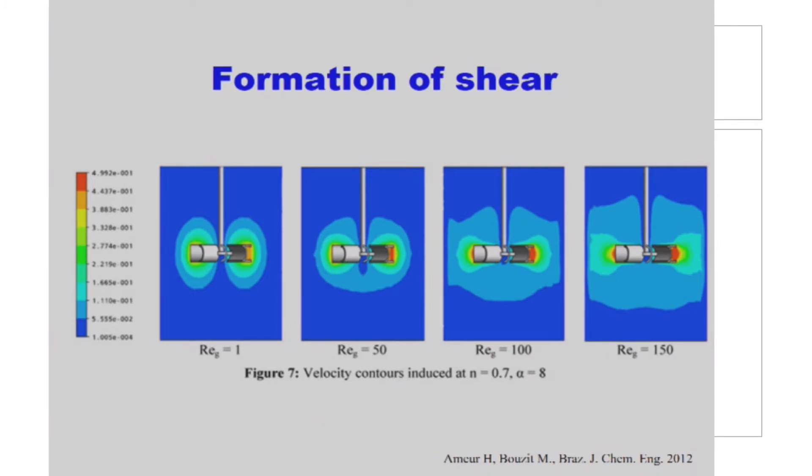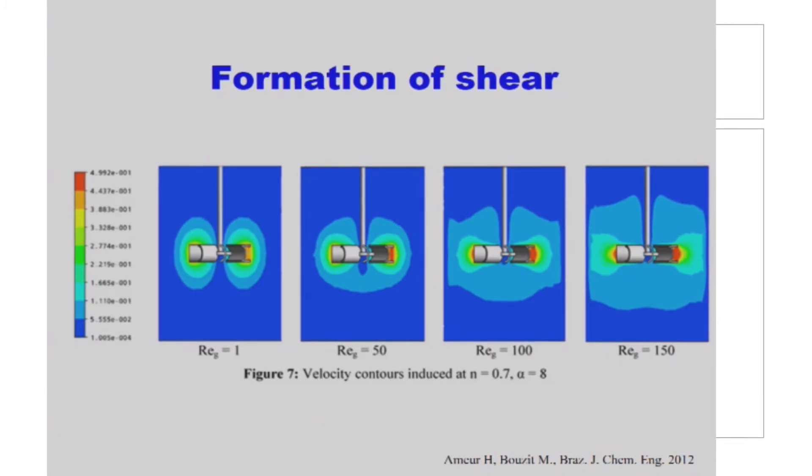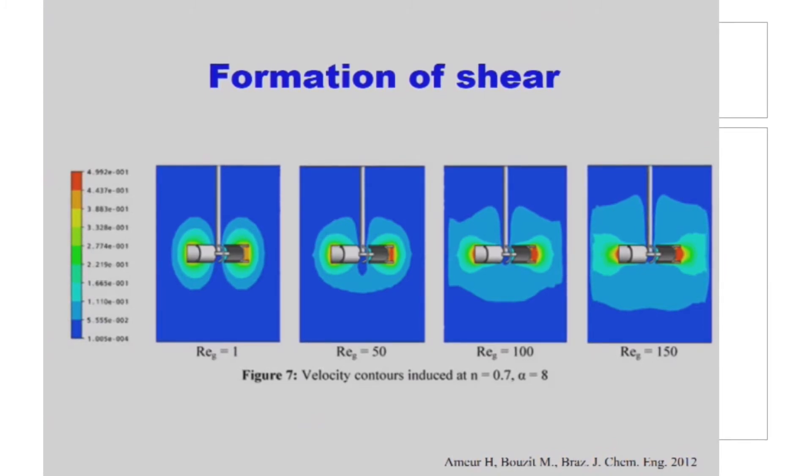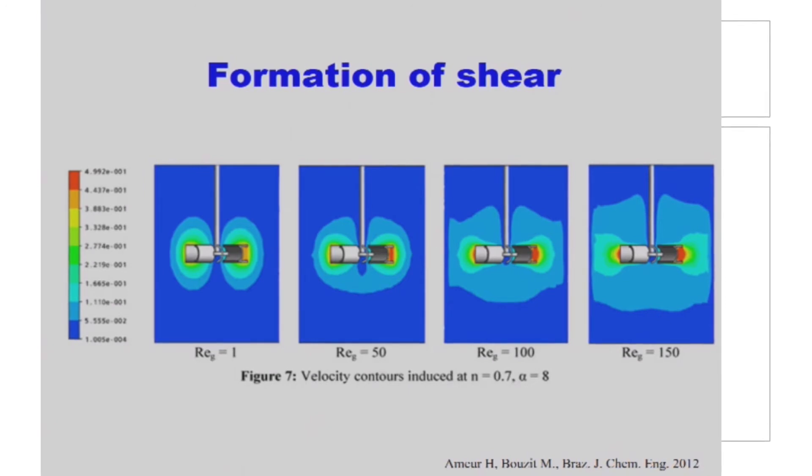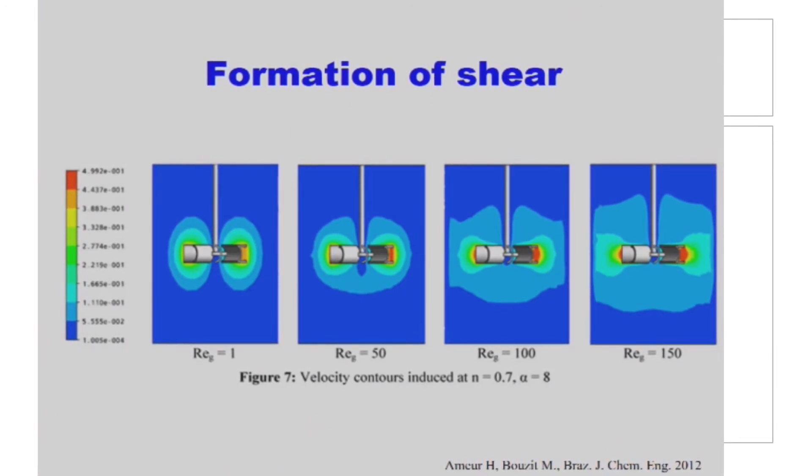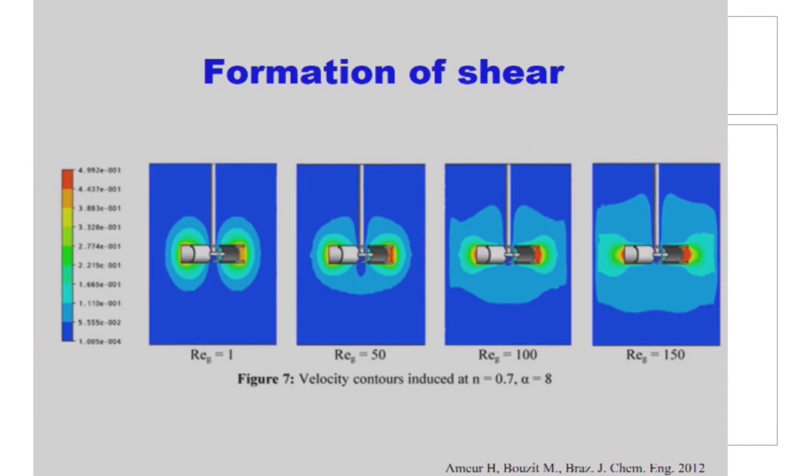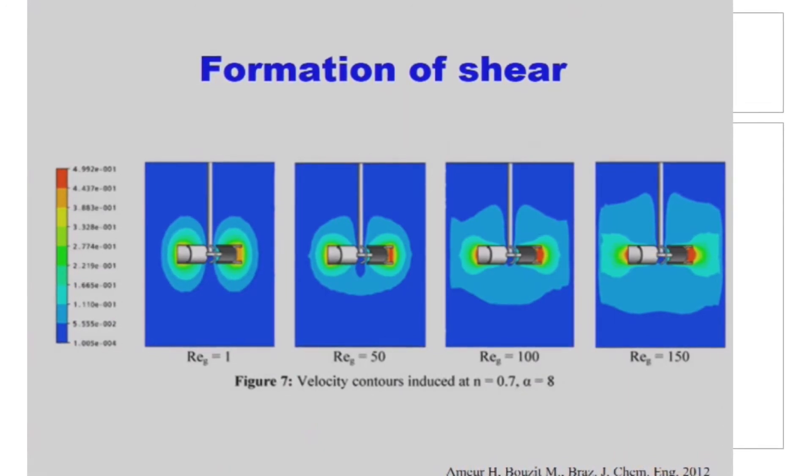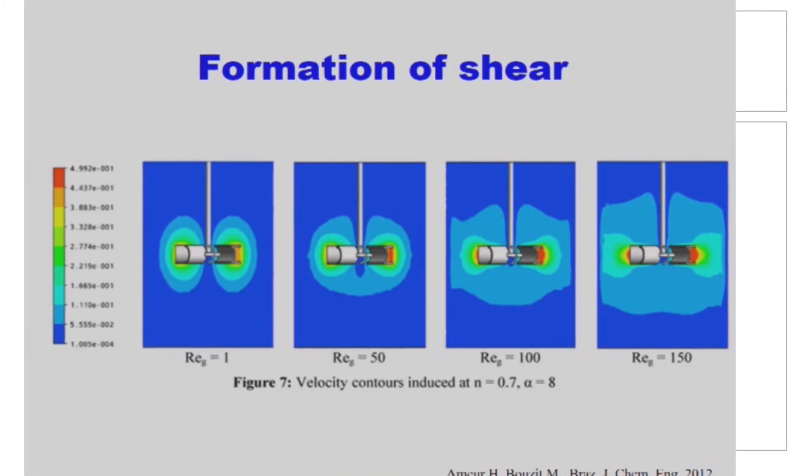In this picture, you can see a good example of what it means and how it depends on the Reynolds number. So is the Reynolds number relatively low? You will see there is some shear kind of around the impeller itself, but not throughout the whole reactor. And this can pose a problem in the sense that when we were talking about this flooding, that the shear throughout the whole reactor is not sufficient in order to kind of make sure that the oxygen is dispersed appropriately.